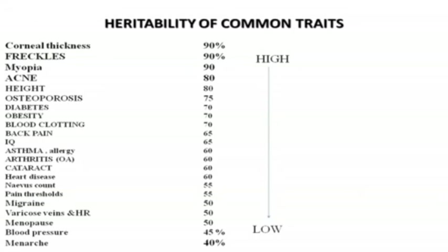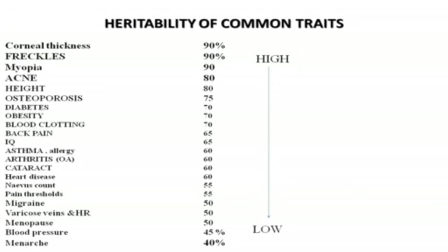Early critics of twin studies used to say that things appear heritable because mothers treated identical twins more similarly than non-identical twins. Some people believed them and thought twin studies were overestimating everything. That changed in the 1980s when a group in Minnesota started finding twins who had been reared apart. They found about 112 pairs of these twins, brought them in for a whole week of intensive testing, didn't let them speak to each other, gathered all their information, and compared them — finding pretty much the same results as when twins had been brought up together.